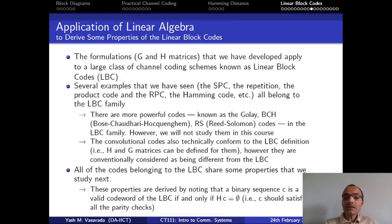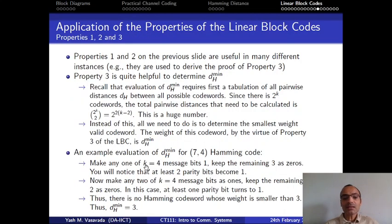And so, no matter which of the message bits I turn to 1, turn into a 1, at least 2 parity bits will become 1, which means that the weight is 3 bits, 1 from the message bit and 2 from the parity bits. And so, that right away tells us that dh min is equal to 3 bits. You cannot get a Heming code, a Heming code word, which is non-zero and whose weight is less than 3 bits. If it is a code word of Heming code, then either it is all 0 or it has at least 3 bits, which are 1s. So, from there we conclude that dh min of Heming code is 3 bits.